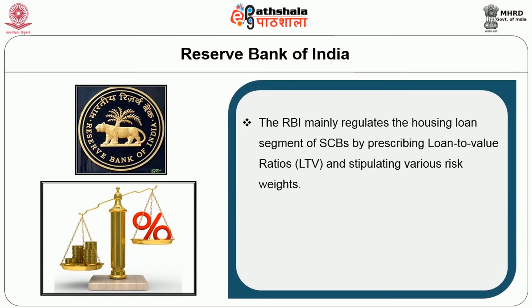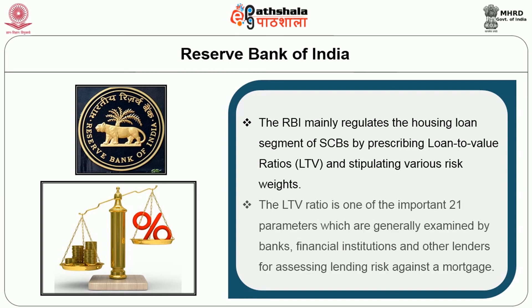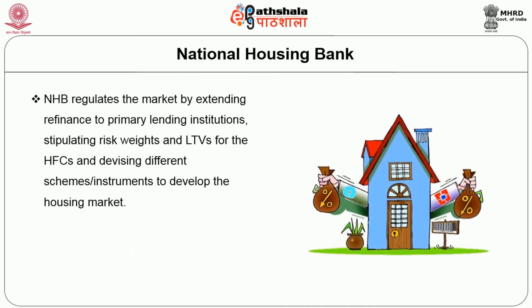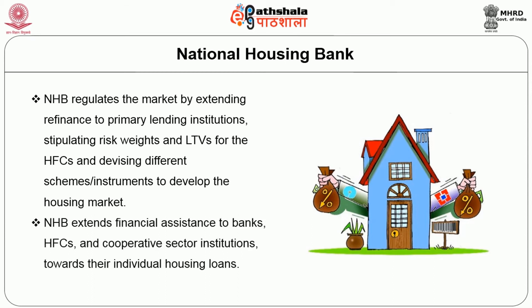The RBI mainly regulates the housing loan segment by prescribing loan-to-value ratios (LTV) and stipulating various risk weights. The LTV ratio is one of the important parameters examined by banks and financial institutions for assessing lending risk against a mortgage. The National Housing Bank (NHB) regulates the market by extending refinance to primary lending institutions, stipulating risk weights and LTVs for HFCs, and devising different schemes to develop the housing market. NHB also extends financial assistance to banks, HFCs, and cooperative sector institutions towards their individual housing loans.